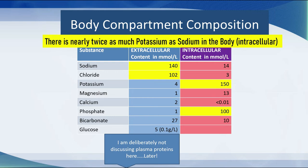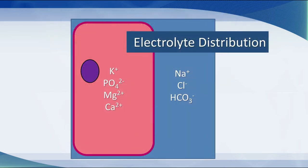Looking at the electrolyte distribution: on the outside, the major electrolytes are sodium, chloride, and bicarbonate. On the inside are potassium, phosphorus, magnesium, and calcium. Water, of course, moves seamlessly along osmotic gradients between the two spaces.